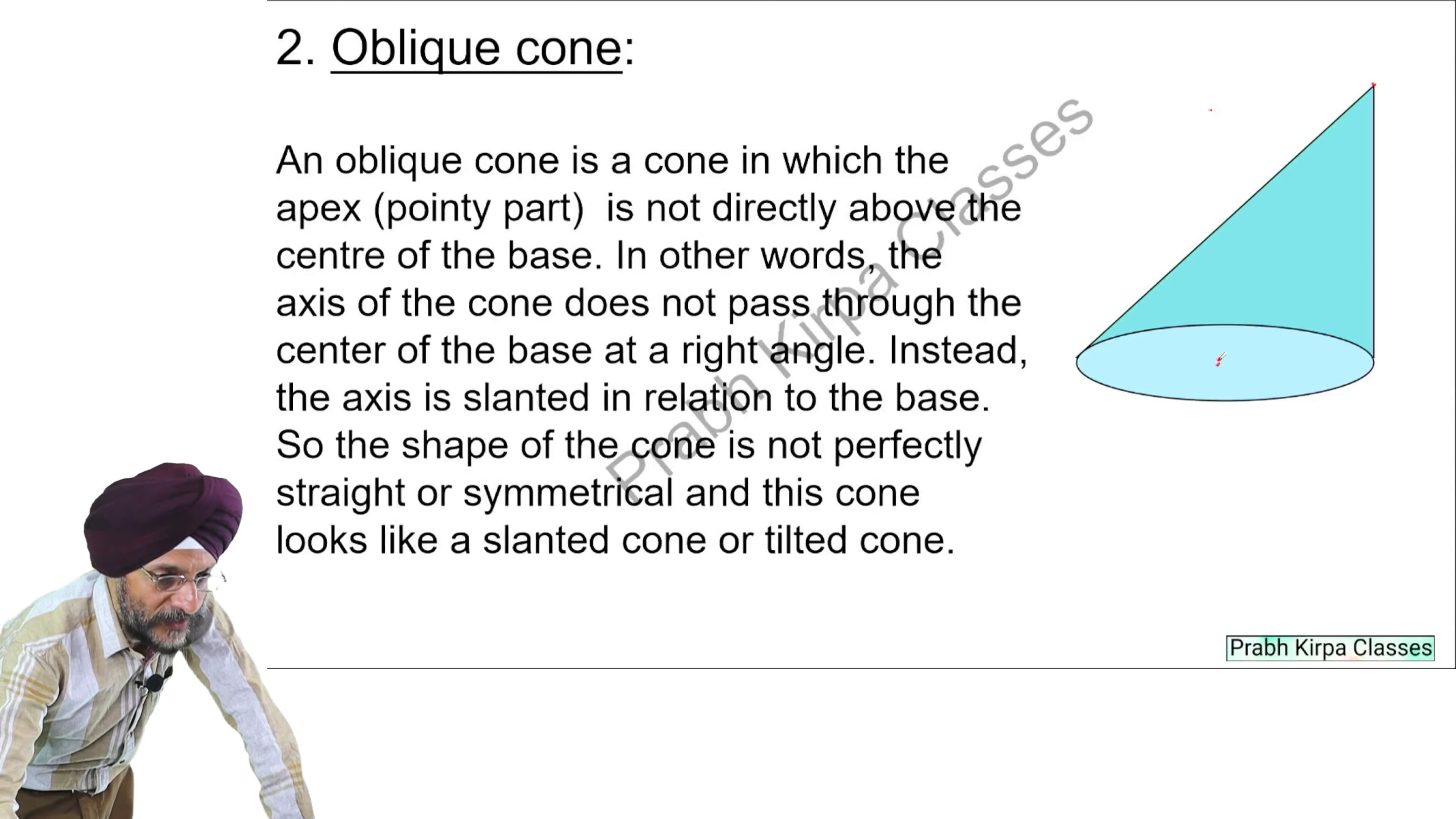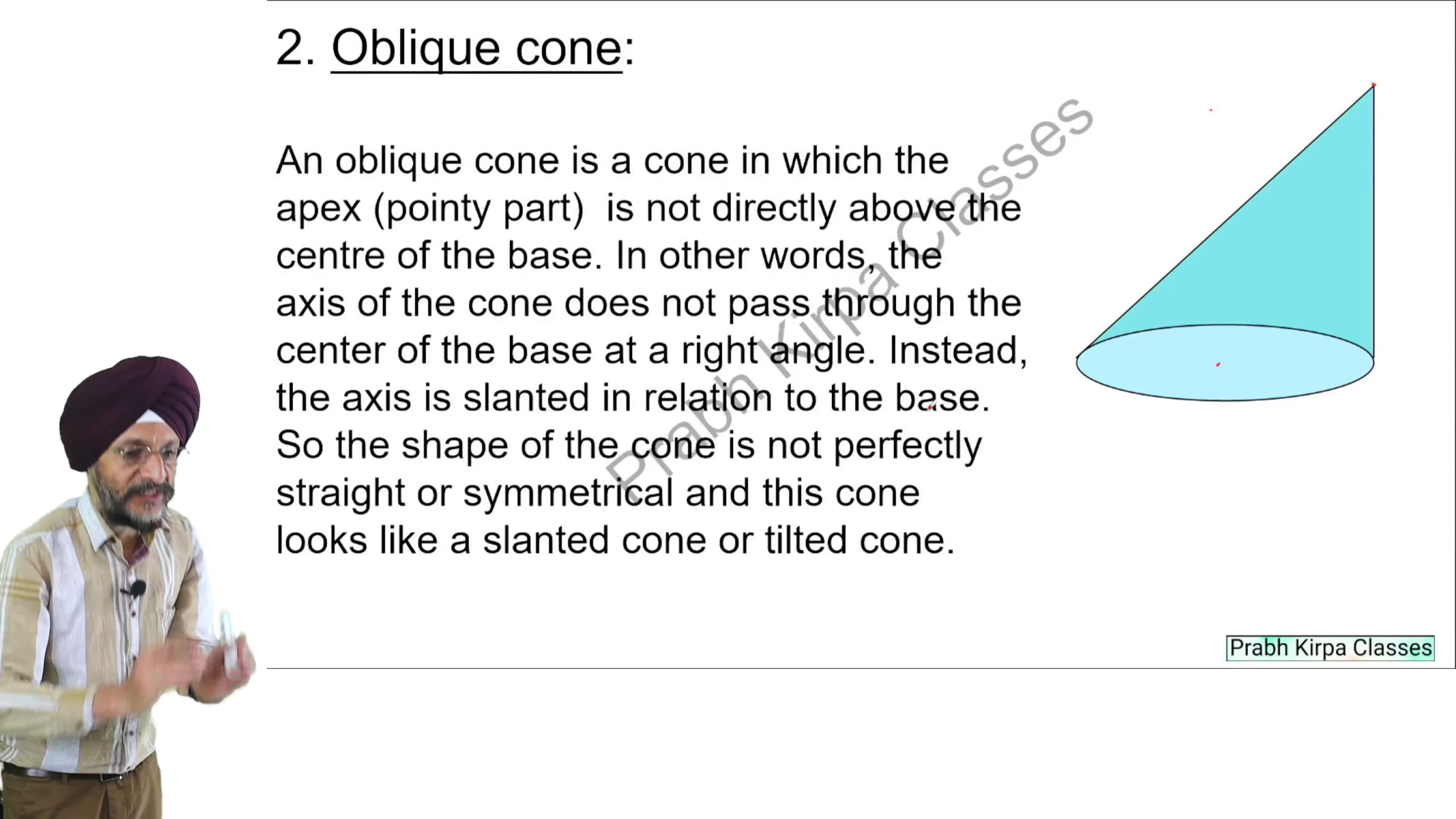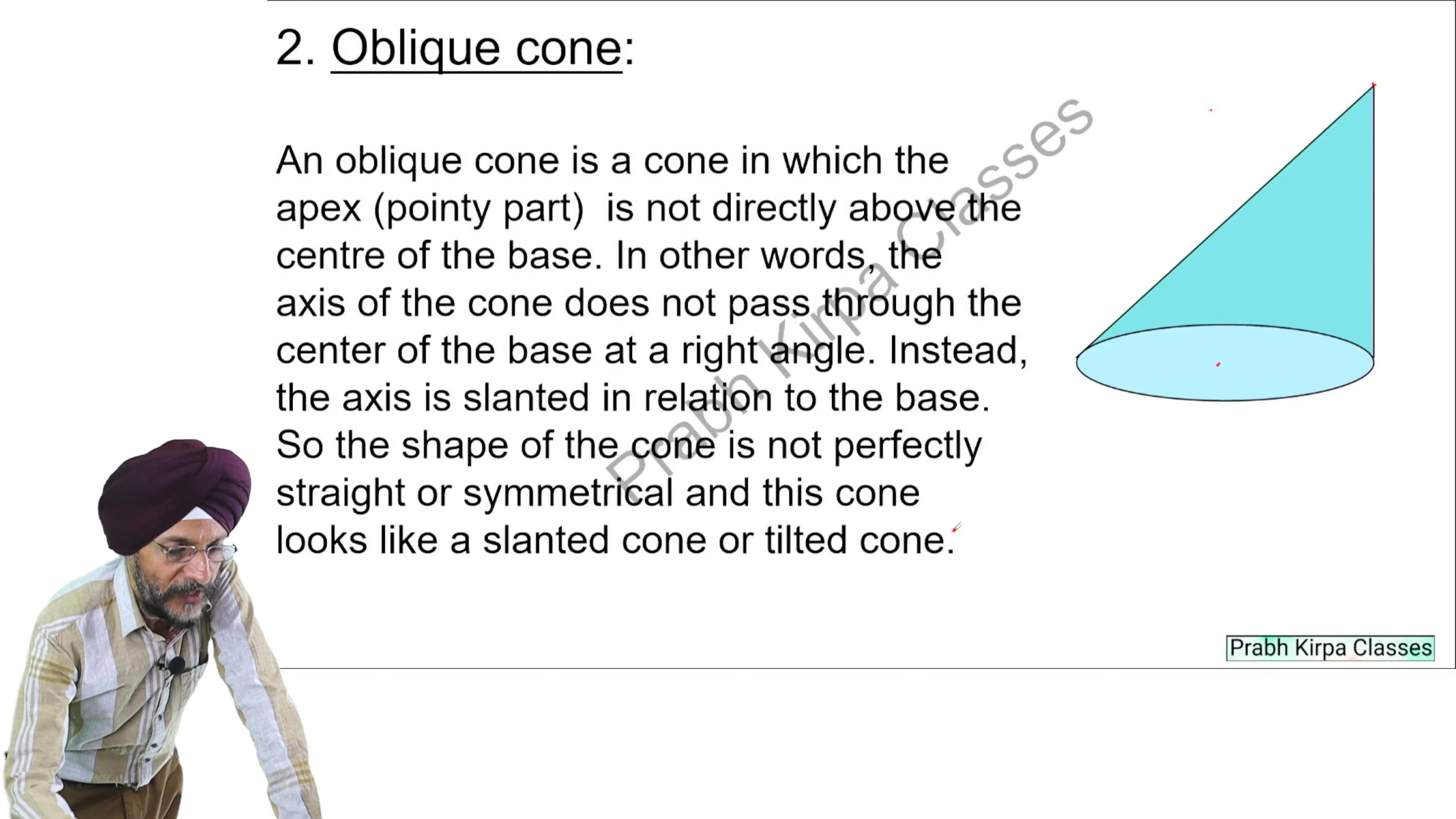If we join this part with this, it will not form a 90 degree angle. Instead, the axis is slanted in relation to the base. So the shape of the oblique cone is not perfectly straight or symmetrical and this cone looks like a slanted cone or tilted cone.